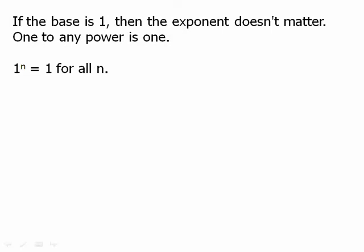If 1 is the base, then the exponent doesn't matter. One to any power is one. 1^n = 1 for all n. That's not restricted to positive integers. That actually works for every single number on the number line. So every single number on the number line, if you put it in for n, 1^n equals 1. So that's an important thing to remember.